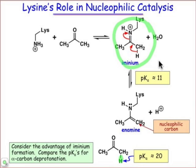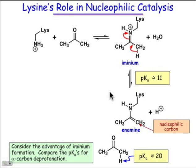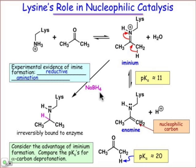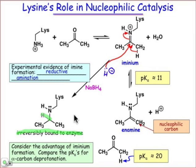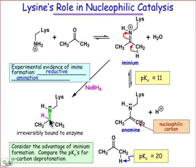Before showing the example of acetoacetate decarboxylase, let's look at the evidence for this intermediate. The way scientists have come to know that the iminium ion is actually formed is by performing a reaction on the enzyme known as reductive amination. Reductive amination involves the addition of a nucleophilic hydride source — H⁻ adds into the iminium group by an ADN step, forming a new stable carbon-hydrogen bond. It's irreversibly bound to the enzyme, so when amino acid sequence analysis is done, rather than obtaining a lysine, one obtains a lysine where the amino group is covalently bound to the substrate molecule. That's how scientists confirmed that the iminium ion intermediate forms in nucleophilic catalysis.